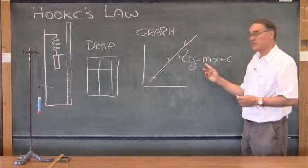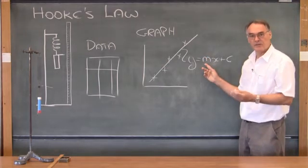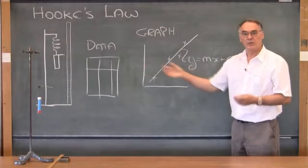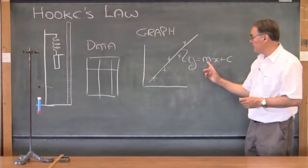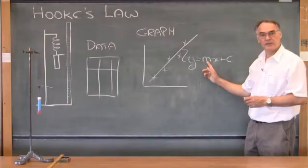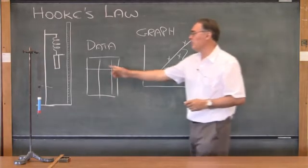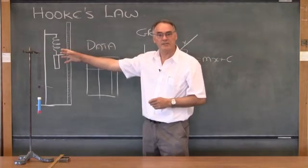Having fitted this known mathematical function to the pattern that we got from the data, we're going to claim that this coefficient over here, the gradient of that line, represents something in the real world over here. It represents the spring constant.